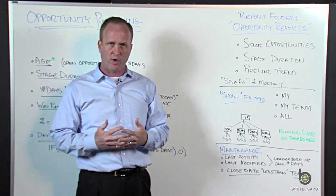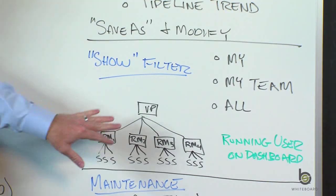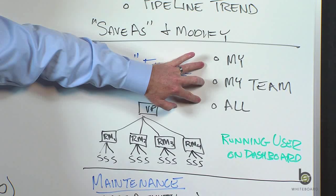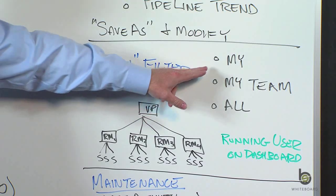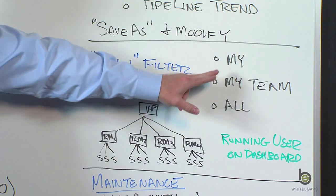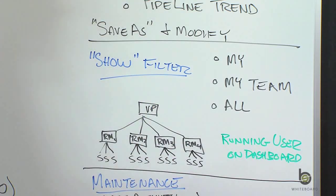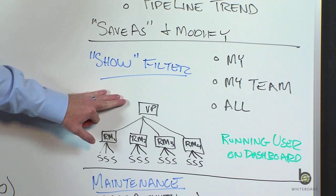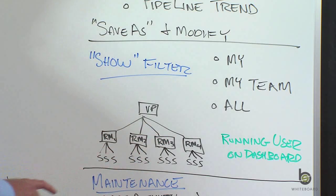Another thing with opportunity reporting: there is a filter called the Show filter on opportunity reports, with picklist values you can choose from. If you're using the role hierarchy, this can have a dramatic difference on the output of your reports. You can pick My, My Team, or All. In this scenario we've got a VP of Sales, four regional managers, and below those regional managers groups of salespeople.